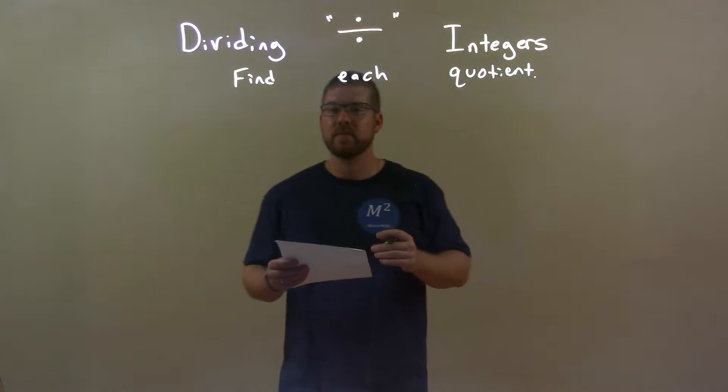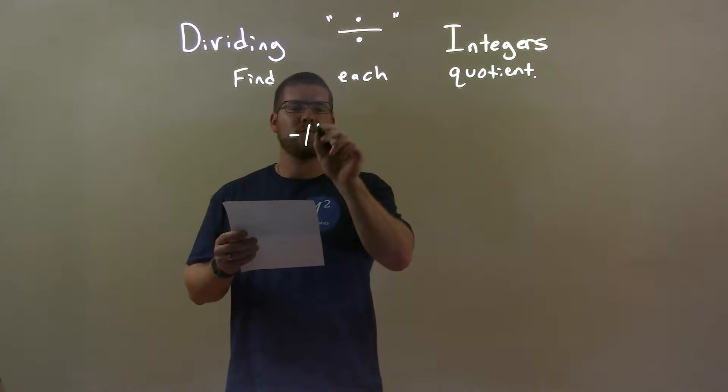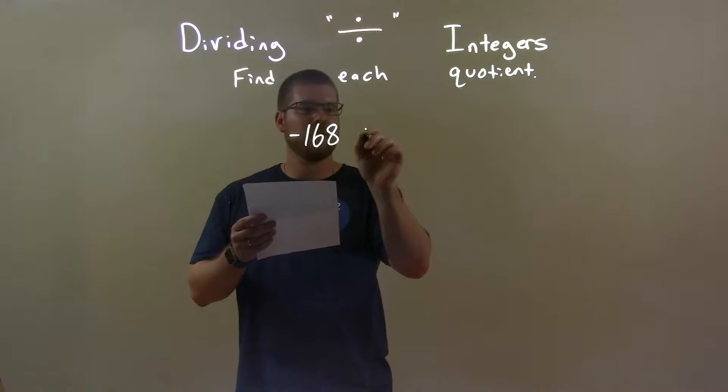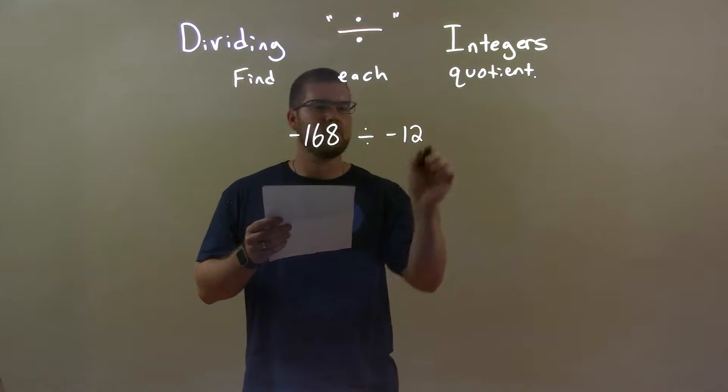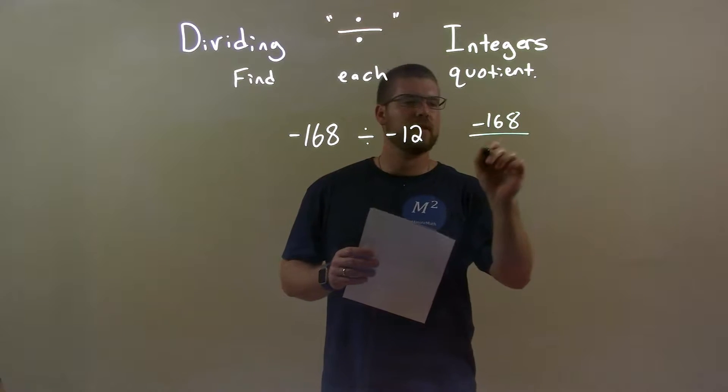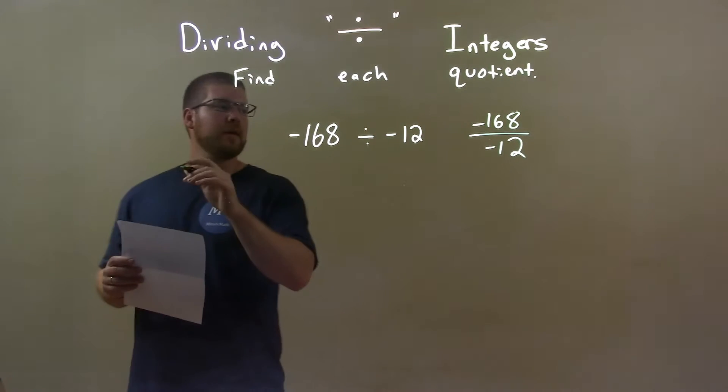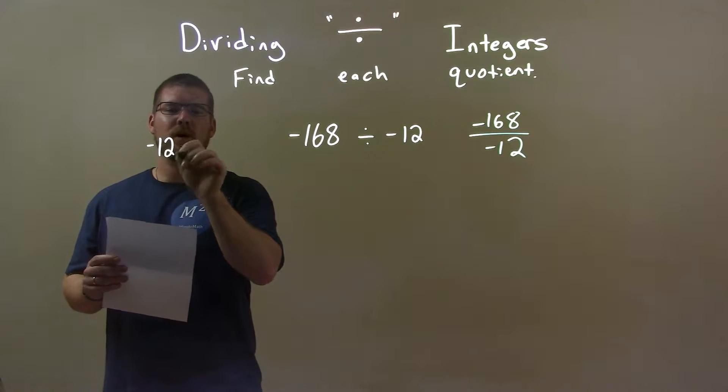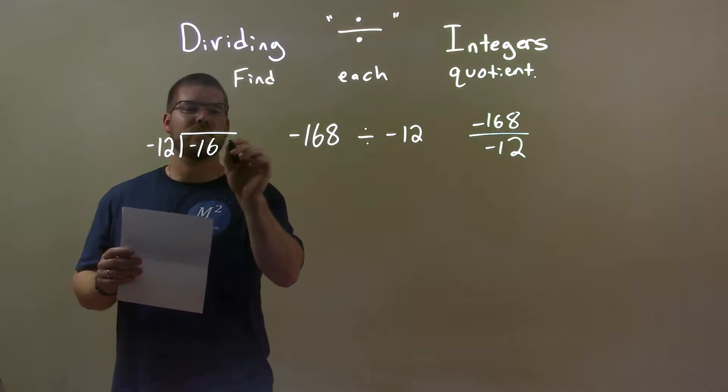So if I was given these integers, negative 168 divided by negative 12, we can see that also as a fraction of negative 168 over negative 12, or in long division form, negative 12 that goes into negative 168.